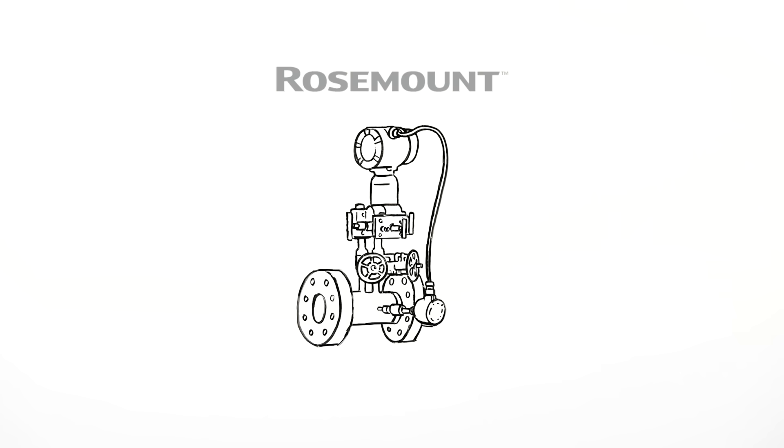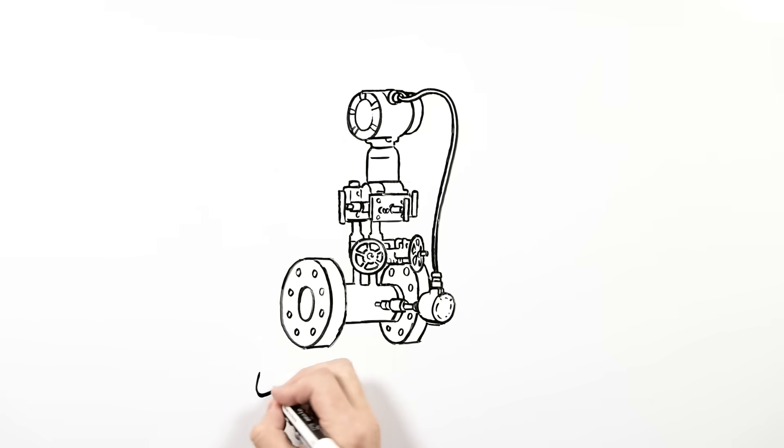Enter the new Rosemount 9295 Process Flow Meter and integrated differential pressure flow meter solution. The 9295 Process Flow Meter is an entirely new DP flow solution.